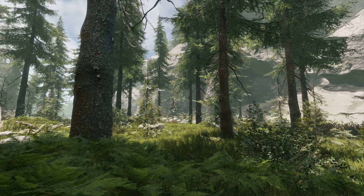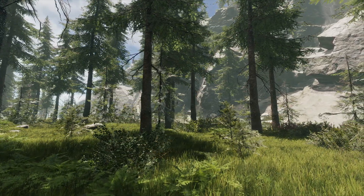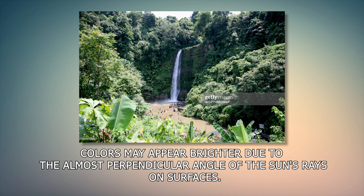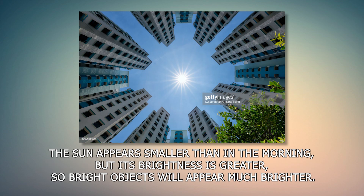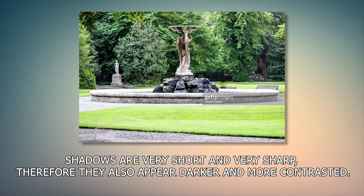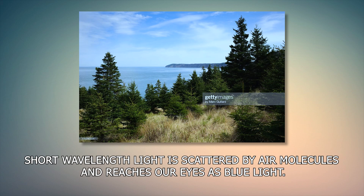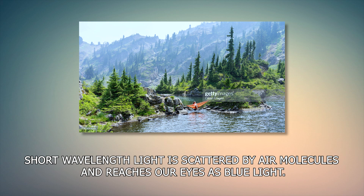Lighting during the day is maybe one of the simplest, but we need to pay attention to a few details if we want to recreate it in the game engine. During midday, colors may appear brighter due to the almost perpendicular angle of the sun rays on the surface. The sun appears smaller than in the morning but its brightness is greater, so bright objects will appear much brighter than usual. Shadows are very short, which can make the landscape appear flatter. However, the shadows are very sharp and they also appear darker and more contrasted. Short wavelength light is scattered by air molecules and reaches our eyes as blue light, so objects in the distance might take on blue shades.